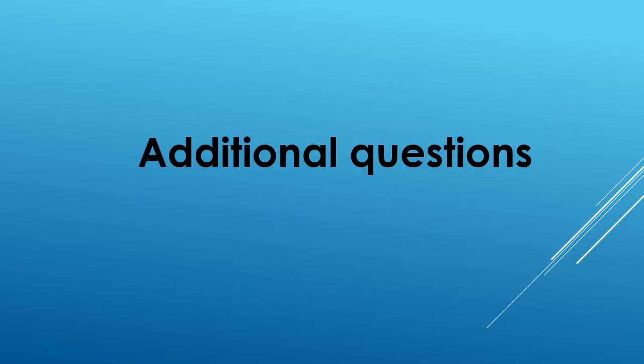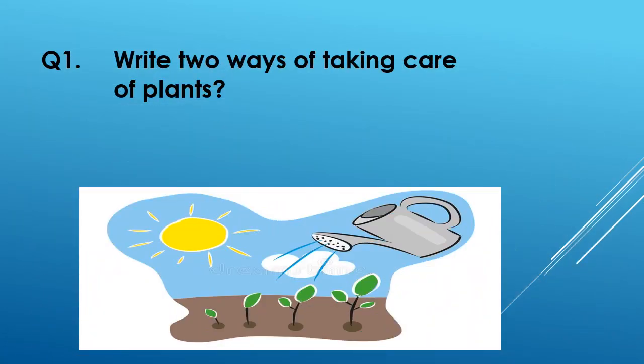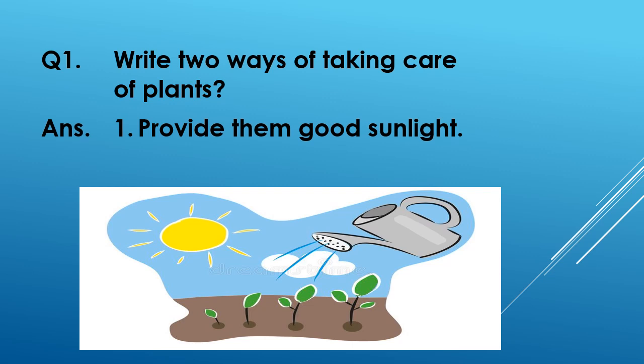Ok children, here are some additional questions which are other than the exercises. You also have to learn these questions. Question number one: write two ways of taking care of plants. Look at the picture carefully. Number one, provide them good sunlight. Number two, water them regularly.